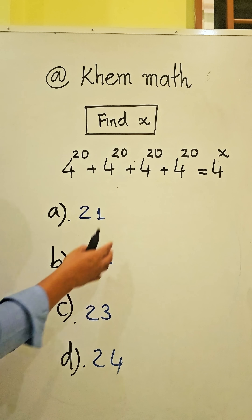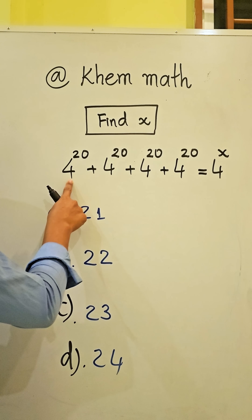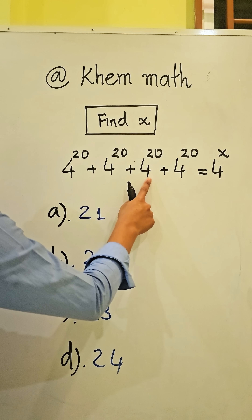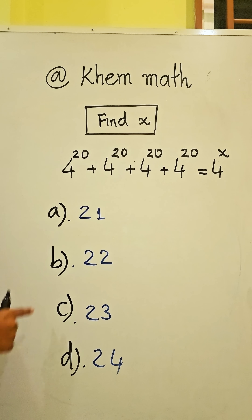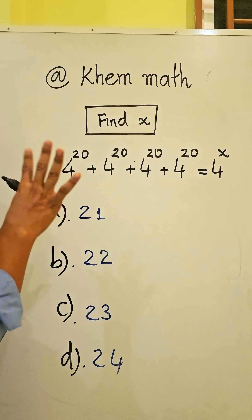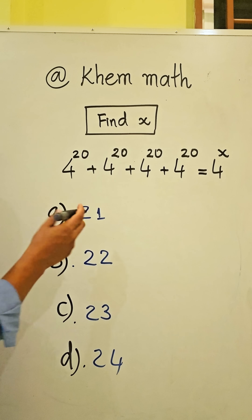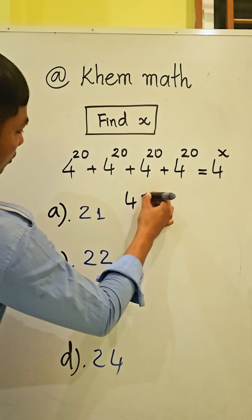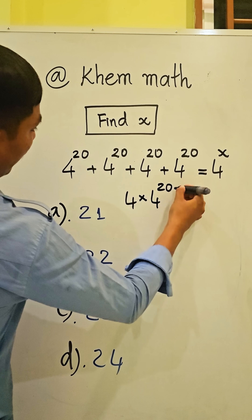Okay, look — our equation has 4 power 20, plus 4 power 20, plus 4 power 20, plus 4 power 20. It has 4 times 4 power 20, so we get: 4 times 4 power 20.